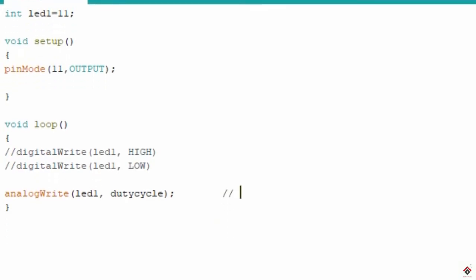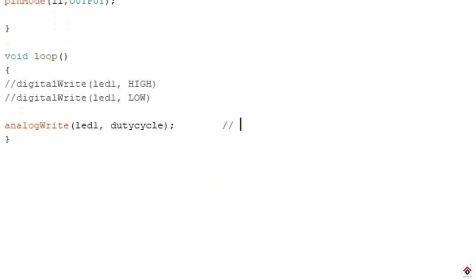So usually in PWM concept in particular Arduino, the PWM duty cycle ranges between 0 to 255. Here 0 stands for low and 255 will be high. So in between this you can vary at whatever percentage you want. So here if I give the duty cycle as 255 the LED will be at its maximum brightness.